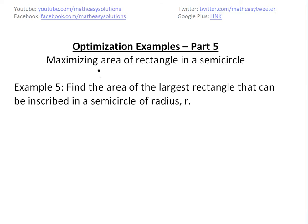It's time for another MathEasy. Today I'm going to discuss more optimization examples — part 5 of this series — basically looking at maximizing the area of a rectangle in a semicircle. That's basic example 5: find the area of the largest rectangle that can be inscribed in a semicircle of radius R.